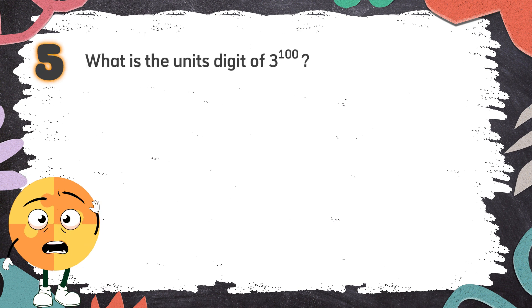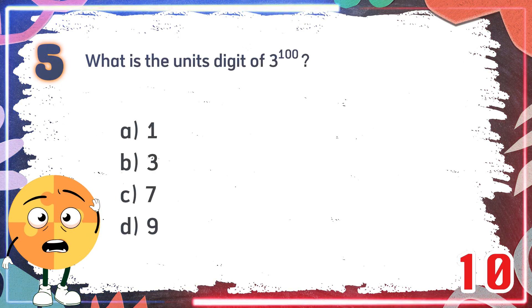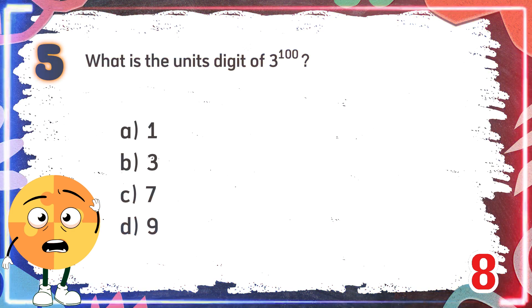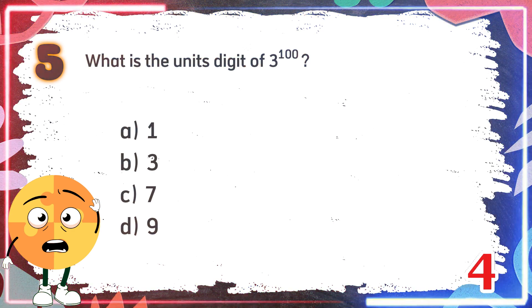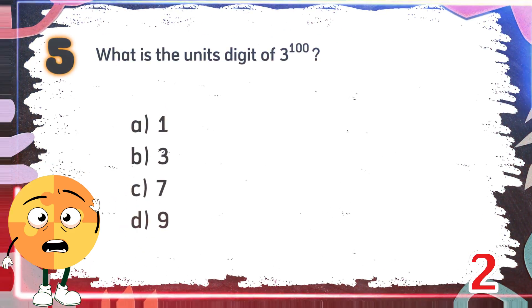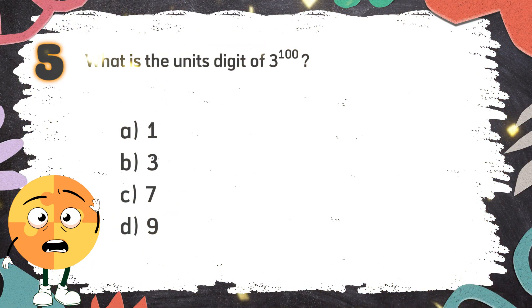Number 5: What is the unit's digit of 3 raised to the power of 100? Again, what is the unit's digit of 3 raised to the power of 100? The choices are: A. 1, B. 3, C. 7, D. 9. The correct answer is A. 1.